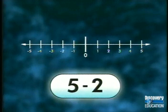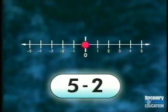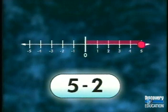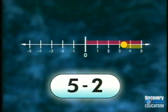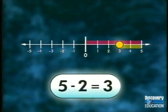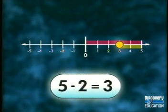In the first example, we'll find the difference of five and two. Begin at zero. Move five units in a positive direction. Since we're subtracting a positive two, we need to move in the opposite or negative direction two units. As a result, we end at three. Therefore, the difference of five and two is three.